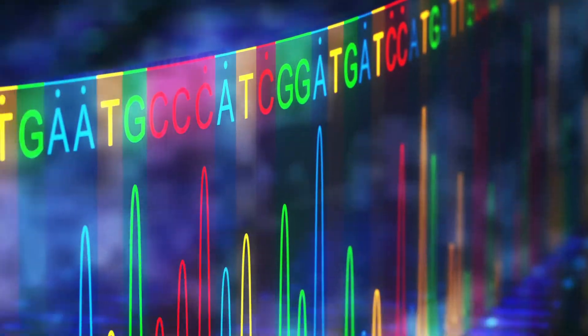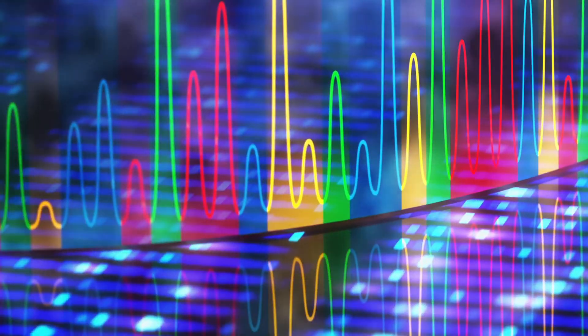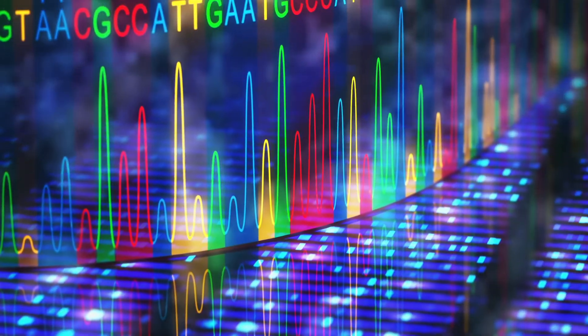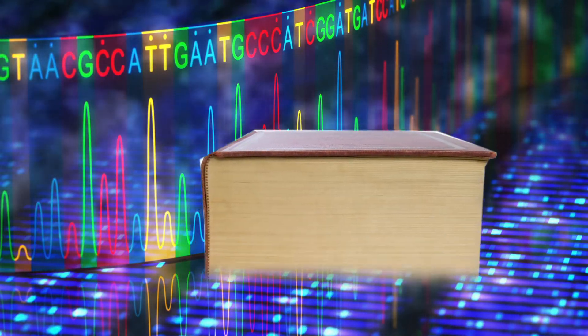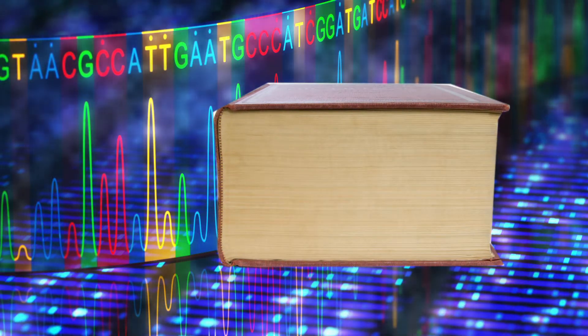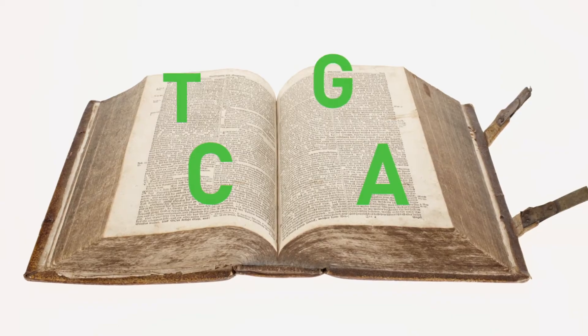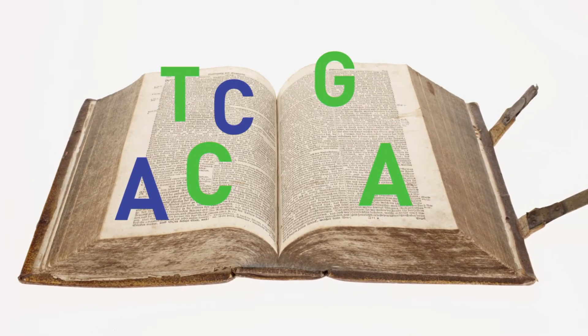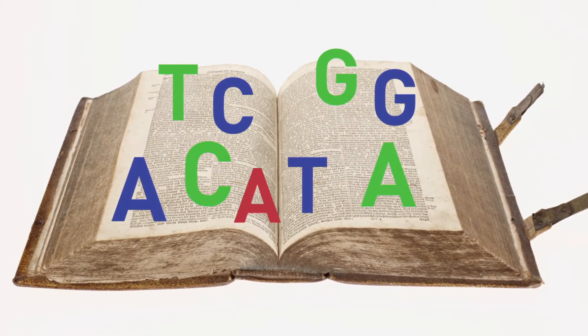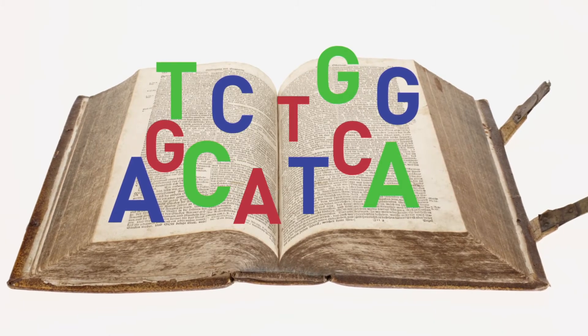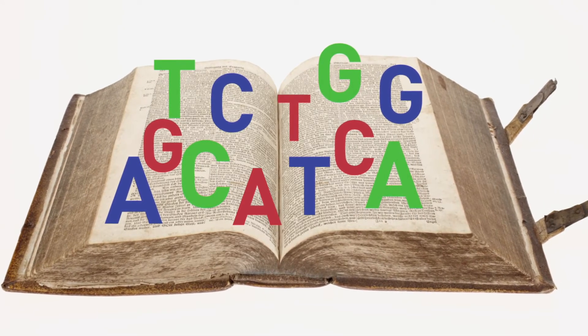We do the same thing with pathogen genomes, only in this case, instead of a sentence, we're reading something equivalent in length to the book War and Peace if we're doing a typical bacterial genome. Over the course of an entire outbreak, you might have 20 kids reading War and Peace to each other 20 times, and only 15 to 20 letters in that entire book might change. But that's enough for us to figure out the order of transmission.